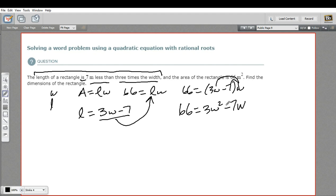This is a quadratic, the highest power of our variable is the squared power, so that fits. To solve a quadratic, to find out what that W is, which is going to give us the width of our rectangle, we want to set the thing equal to 0. So I'm going to subtract 66 from both sides. That's going to give me on one side 3W squared, minus 7W, and then minus 66, and that equals 0.